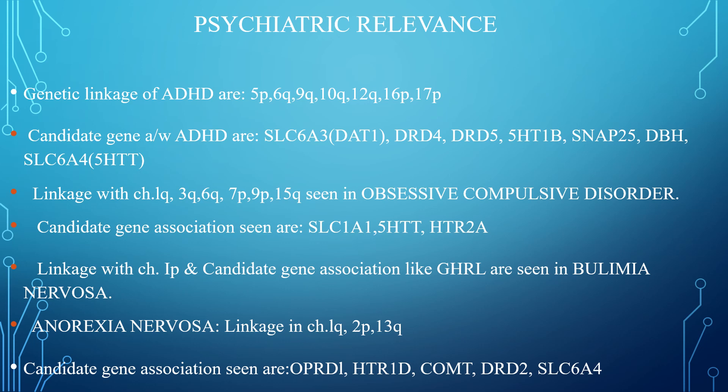In ADHD, genetic linkage was seen in 5P, 6Q, 9Q, 10Q, 12Q, 16P, and 17P. Similarly, in bulimia the linkage was with GHRL, and in anorexia the linkage was with chromosome 1Q, 2P, and 13Q.